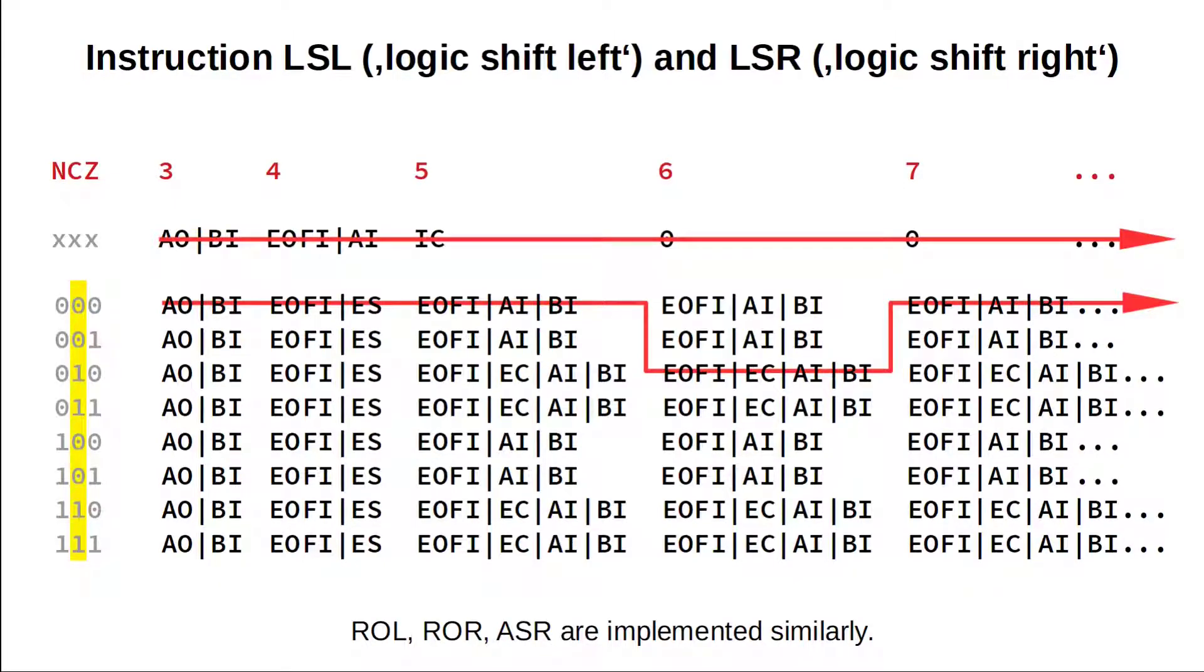A out, B in again copies A to B. E out, ES adds the inverse of A to A. The result of this operation is always 255. The important point here is that this reliably clears the carry-out flag of our flags register. Thus, we have C equals zero now and stay on the top line of our microcode. Next, we simply add A to A. Now it's getting interesting.